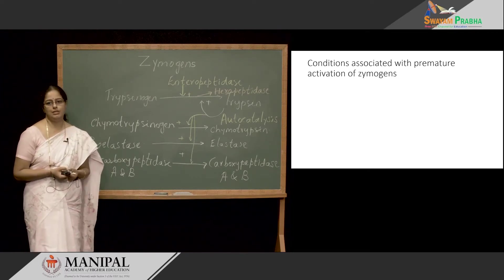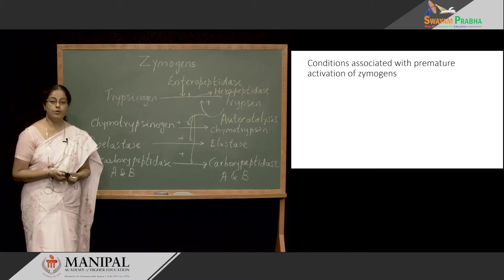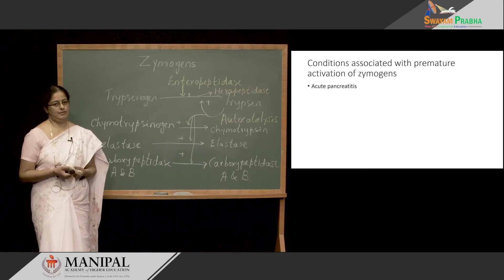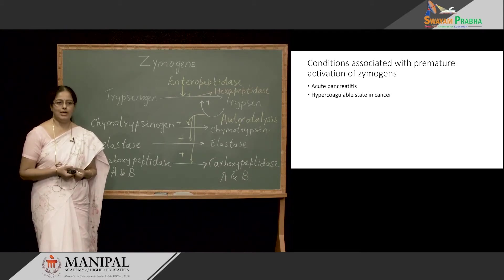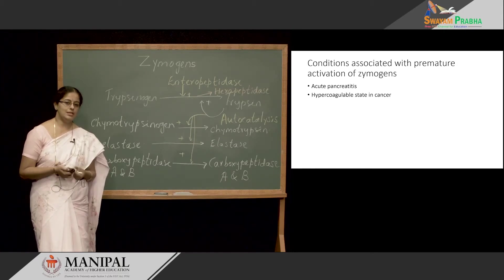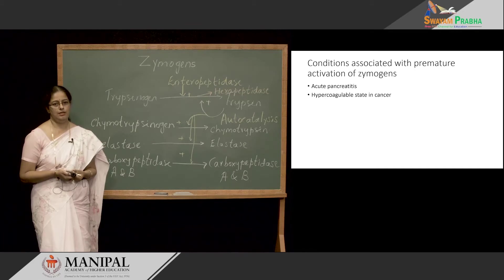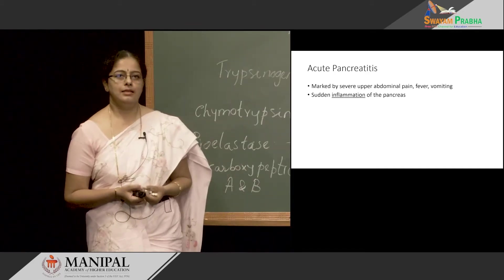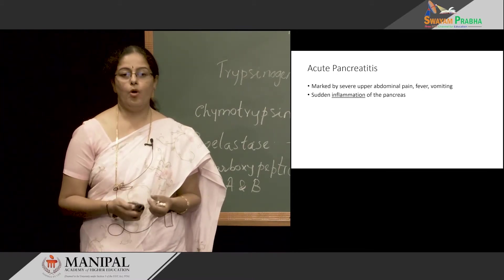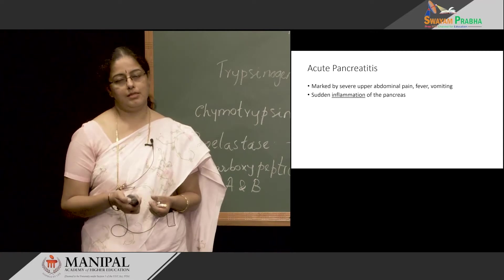There are conditions associated with premature activation of Zymogens. There is a condition called acute pancreatitis where pancreatic Zymogens get prematurely activated. The patient with acute pancreatitis presents with severe abdominal pain, fever, and vomiting, and all these symptoms increase on food intake. Sudden inflammation of the pancreas is responsible for this condition.